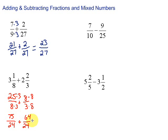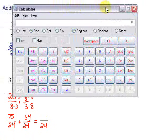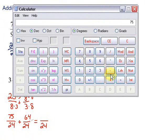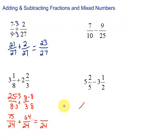Then we will go ahead and add across the top because we have our common denominator of 24. So 75 plus 64. Let's grab the handy dandy calculator. 75 plus 64 is 139. So we have 139.